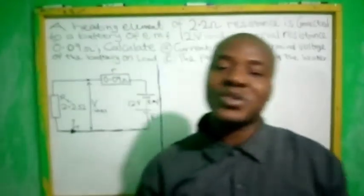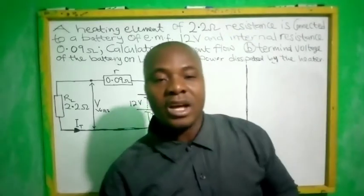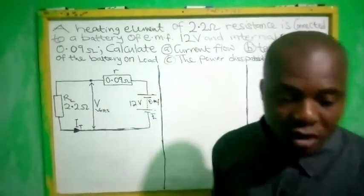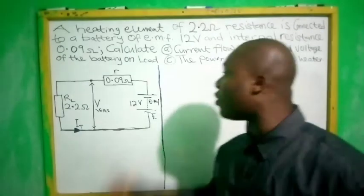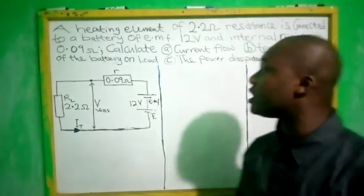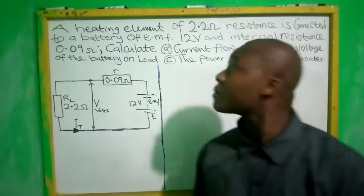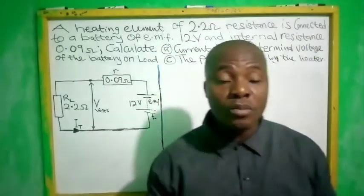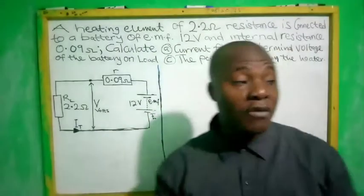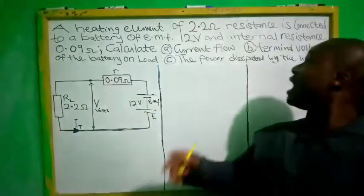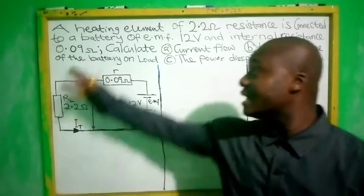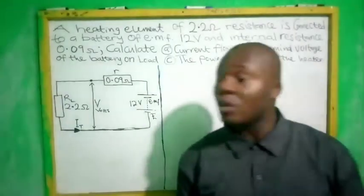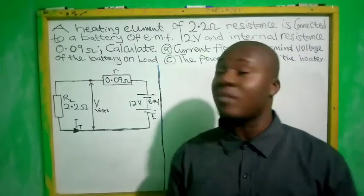Welcome back to my YouTube channel. In today's video we have a question on the board. We are asked to calculate the following. A heating element of 2.2 ohms resistance is connected to a battery of EMF 12 volts and internal resistance 0.09 ohms.